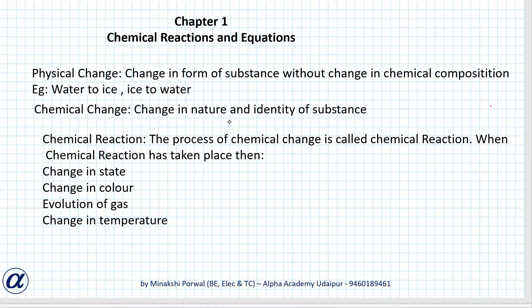Chemical change is a change in the nature and identity of a substance, like milk left at room temperature during summer, iron substance left exposed to humid atmosphere, food is cooked — these are all chemical changes. It is irreversible; like food cooked, we cannot obtain the raw food again.